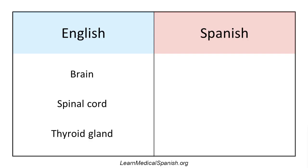We're kind of going from the head down to some extent, so we'll start with the brain. El cerebro. El cerebro. Think of English words that sound similar — it makes it easy to remember, right? Cerebral — it's come obviously from the same root.